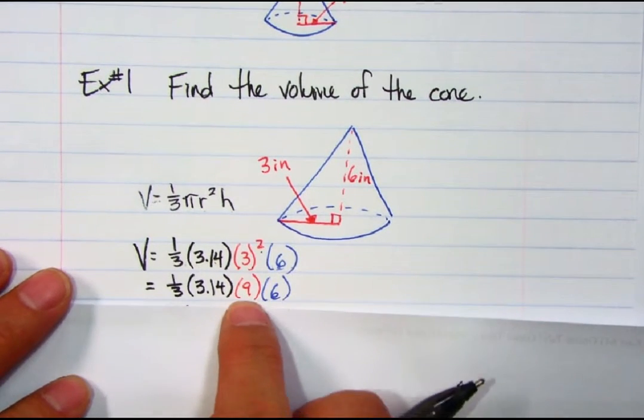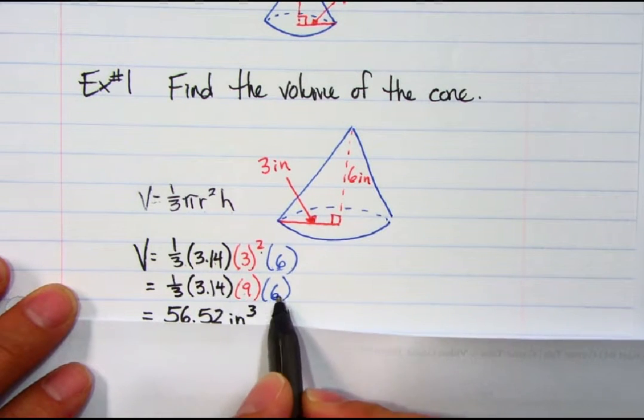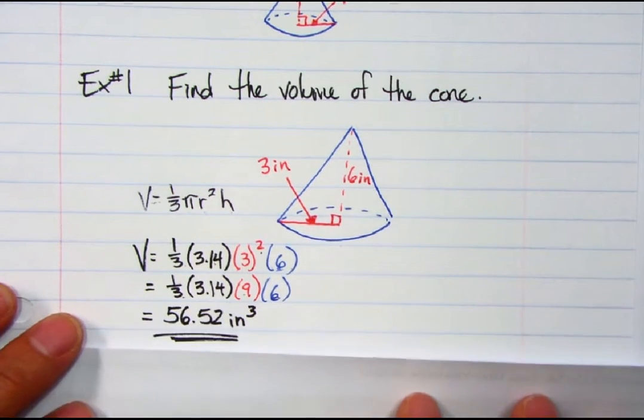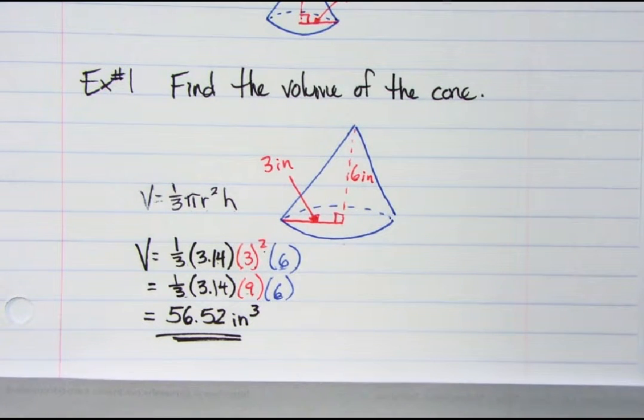3 squared, I got exponents first, so I get 9. And then I just multiply everything. What I would do is multiply these three and then divide by 3. I got 56.52 cubic inches would be the volume of that cone.